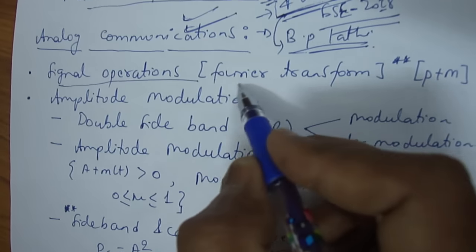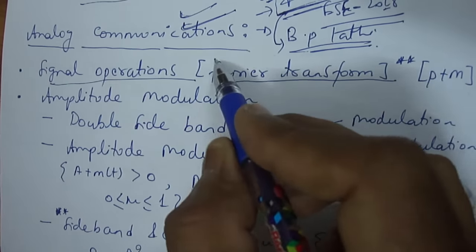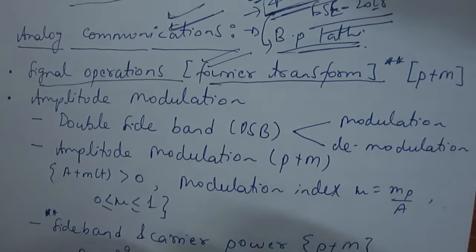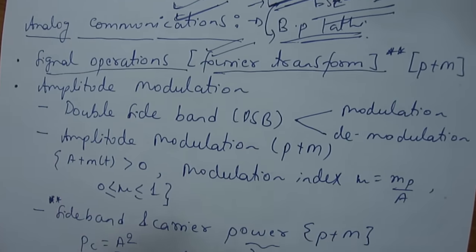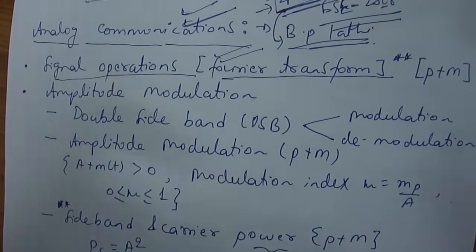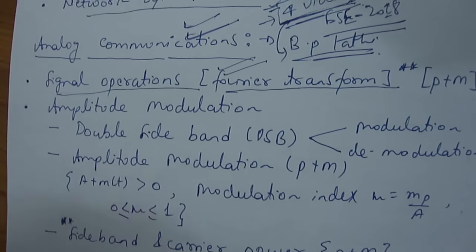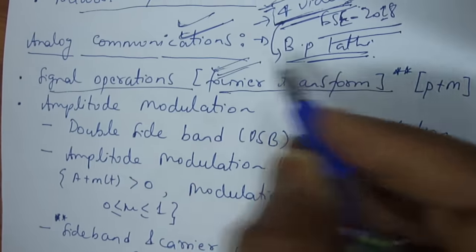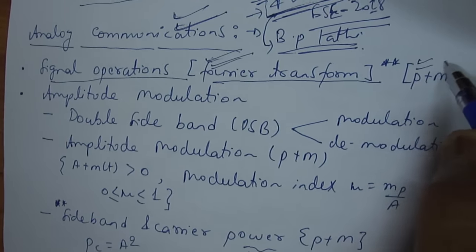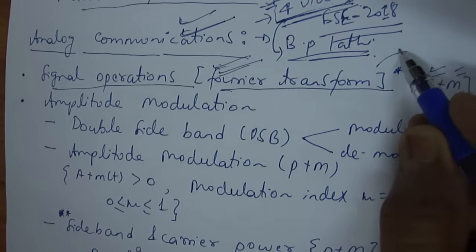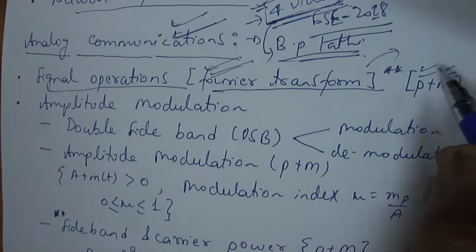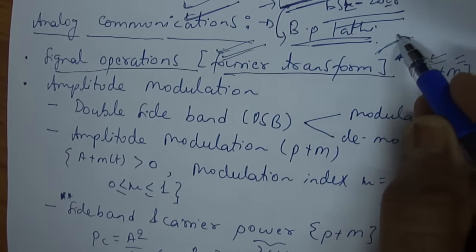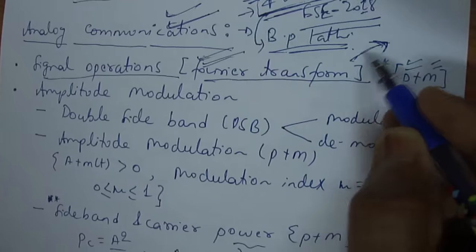The first important topic is signal operations. If you have understood the Fourier transform, then the whole of analog communication will be straightforward. Topics include: time expansion, time compression, bandwidth expansion, bandwidth compression, linearity, non-linearity, and inverse Fourier transform. These signal operations are important both for prelims and mains. They can also be asked under signals and systems — so it is like a double-edged sword. You have to study it regardless.